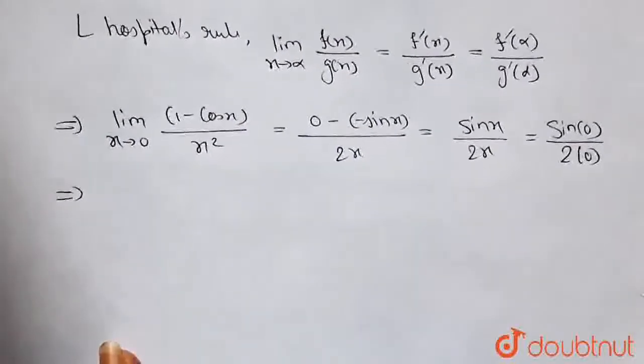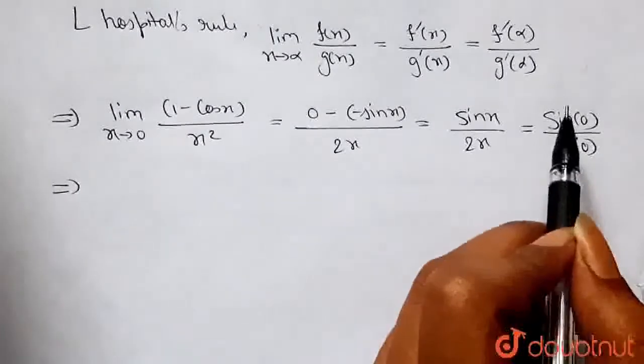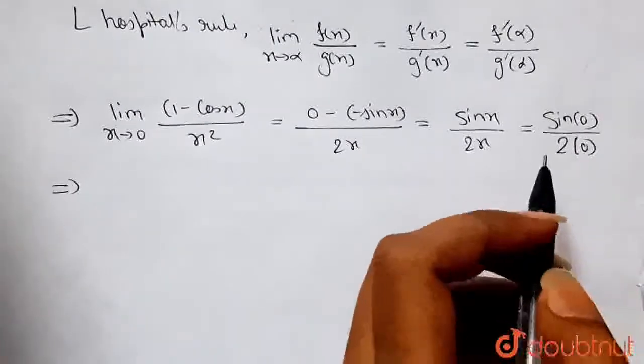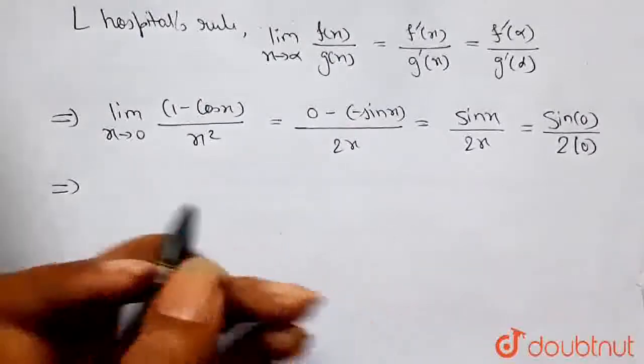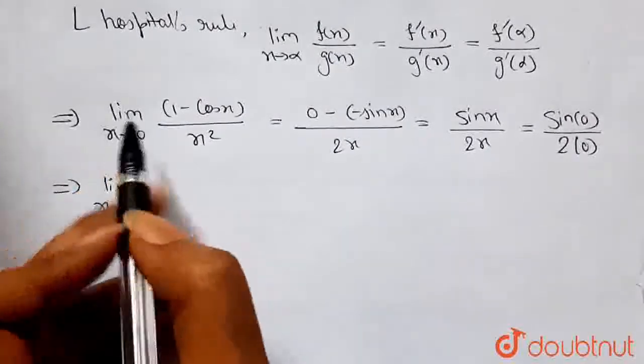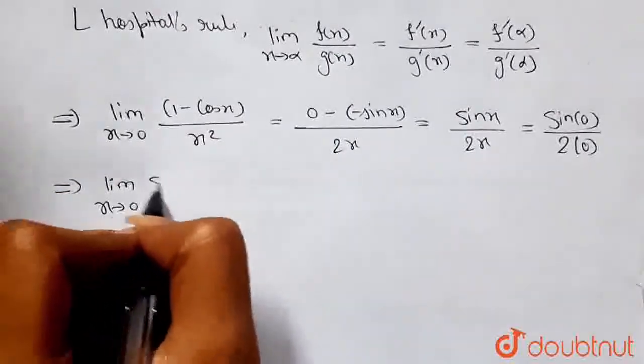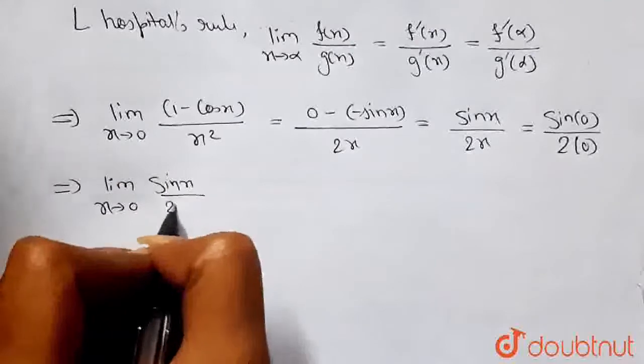We have to use L'Hospital's rule as many times as we are getting the form 0/0. Let's differentiate our function again. After using L'Hospital's rule for the first time, we had limit as x tends to 0 of sin x divided by 2x. So we will use this.